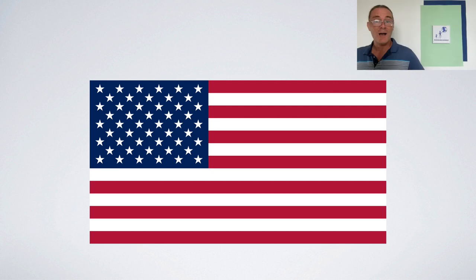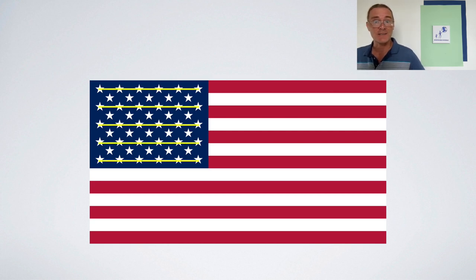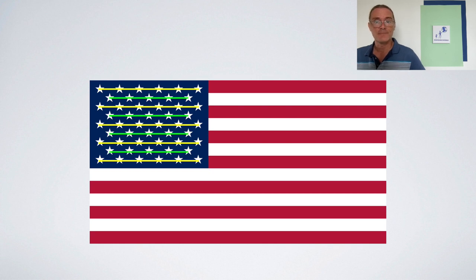So, how do you make a set of rows to fit 50 stars evenly? It turns out there is a great arrangement. Five rows of 6 makes 30, plus four rows of 5 makes 20, and of course 30 plus 20 makes 50.